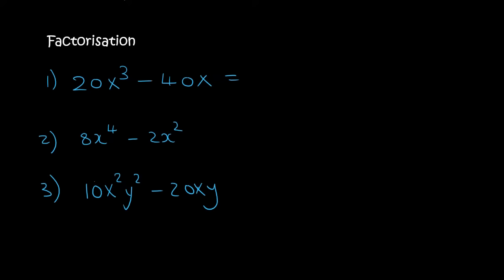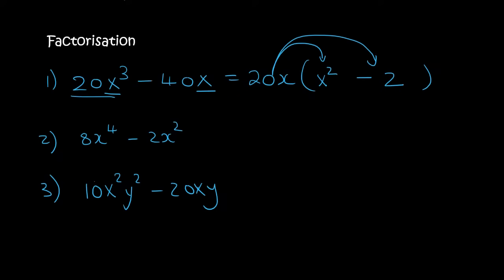For number 1: the largest factor of both terms is 20. This one has 1 x, this one has 3, so they share 1 x in common. What are we left with in the first term? Only an x squared, and then minus 2. To check: multiplying back gives 20x³, and multiplying the second gives 40x.